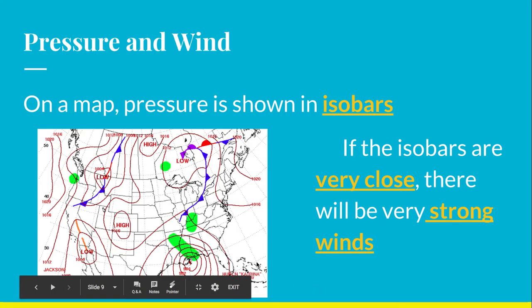So this particular one — we have an area of very low pressure, 984, that's super low — and the bars are fairly close together. That means in this particular area you're going to have very, very strong winds. This is the pressure map that was recorded when Hurricane Katrina made landfall over New Orleans in 2005, which makes sense — hurricanes equal strong wind.